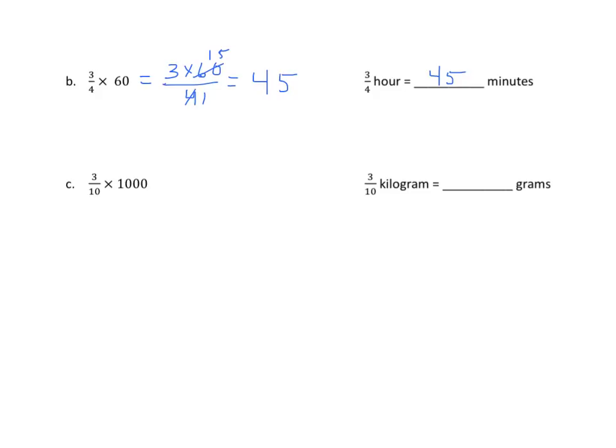We can also apply this to the metric system. And again, the conversion factor between grams and kilograms is 1,000. Every kilogram is equal to 1,000 grams. So we have 3 times 1,000 over 10. And if I divide 1,000 by 10, I get 100. And the answer is 3 times 100 divided by 1 is 300. So 3 tenths of a kilogram equals 300 grams.